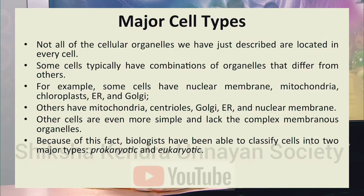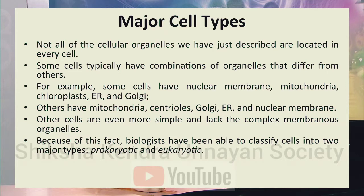In this class, we will go through the various types of cells. There are cellular organelles present in every cell, but not every organelle is present in each kind of cell. Some cells have certain combinations of organelles: for example, some may have chloroplast, mitochondria, endoplasmic reticulum, and Golgi body, while others may also have centrioles and nuclear membrane. Some cells are simpler and lack complex membranous organelles.